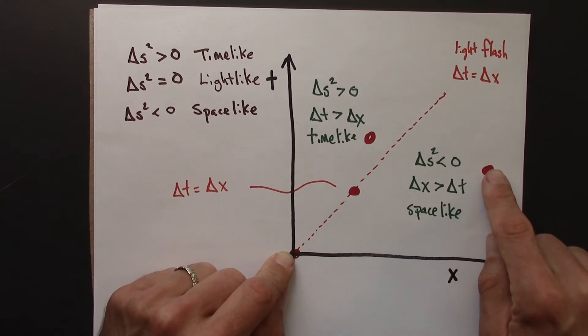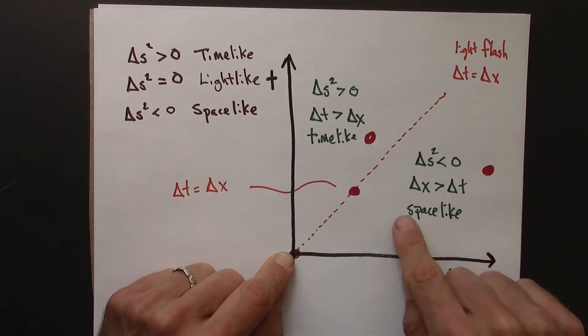So an event over here, well that's a space-like separation, and we know that in all reference frames this will be a space-like separation. This is reference frame independent.